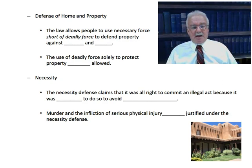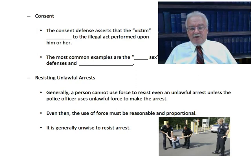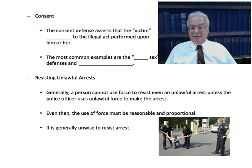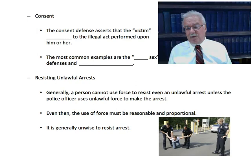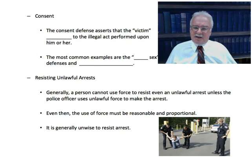Let's talk about the consent defense. The consent defense asserts that the victim consented to the illegal act performed upon him or her. The most common examples are the rough sex defense, where two people agreed to engage in sadomasochistic sex and one might be injured, and professional boxing, where two consenting people try to inflict serious injury on each other. Because they're both consenting and in a state-licensed event, there's no crime even if one injures or kills the other. However, unsanctioned fighting like Fight Club won't qualify since it's not a licensed event with doctors and physicals.